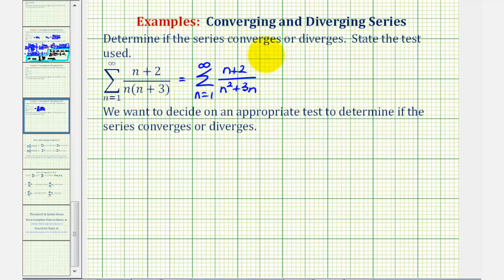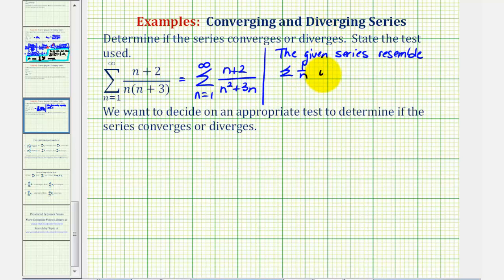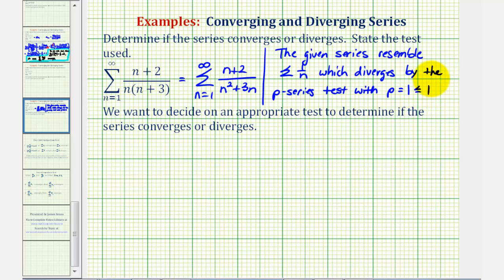The given series resembles the sum of one divided by n, which diverges by the p-series test with p equal to one, which is less than or equal to one. This is actually the harmonic series. Whenever we have a given series that resembles a known converging or diverging series, this indicates we probably want to use the limit comparison test or the direct comparison test. For this example, let's apply the limit comparison test.